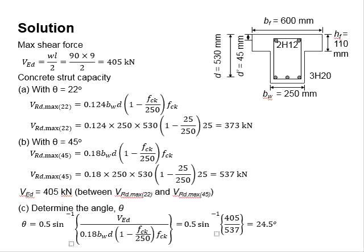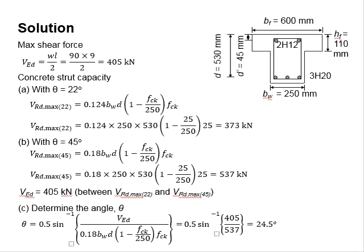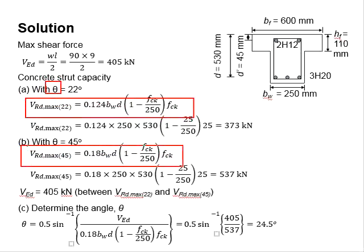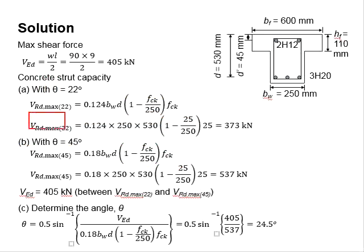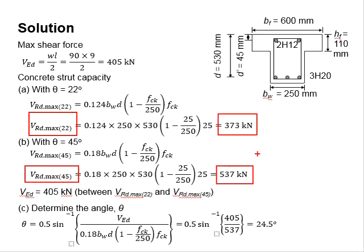First, we design for the vertical shear load. To determine the vertical shear load, we construct a shear force diagram. The maximum shear force equals the reactions at the supports, which is equal to 405 kN. Next, we test the shear angle based on two equations for 22 and 45 degrees. Vrd,max at 22° is obtained as 373 kN, and Vrd,max at 45° is obtained as 573 kN.